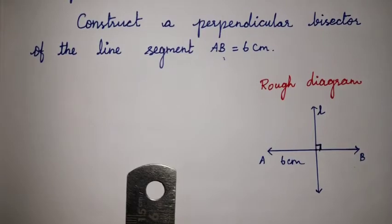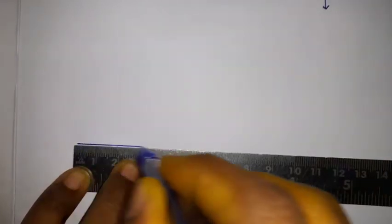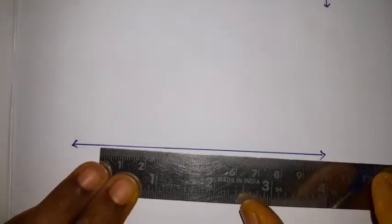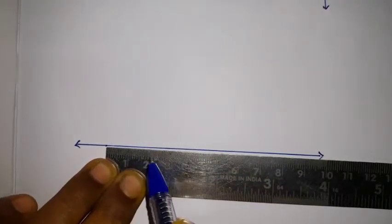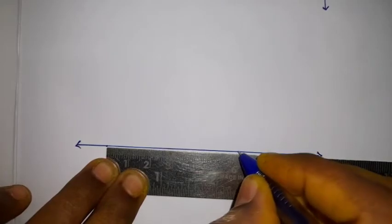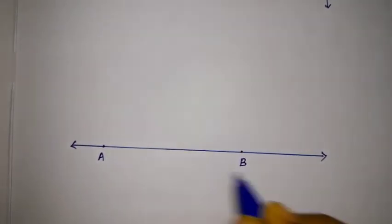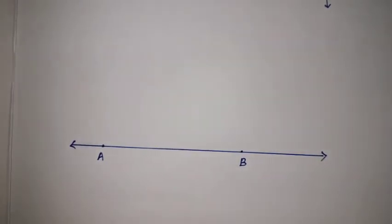Using a scale, draw the line segment. Use a compass to find the midpoint. The line segment AB equals 6 cm. Place point A at the start, measure 6 centimetres, and mark point B at the end. Now, to draw the perpendicular bisector, we use the compass. The compass radius must be set to more than half — that is, more than 3 cm. We do not use the scale for this; we use the compass.